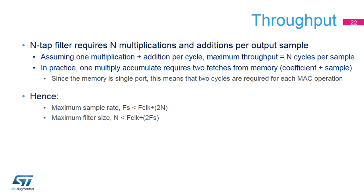The clock reference of the FMAC module is the Cortex-M4 with FPU free-running clock, F-Clock. An N-tap filter such as FIR requires N multiplications and additions per output sample, knowing that each MAC requires 2 memory reads, thus 2 clock cycles. As a consequence, the maximum sample rate is F-Clock divided by 2N, and N must be lower than F-Clock frequency divided by 2 times the maximum sample rate frequency. Assuming the F-Clock frequency of the STM32G4 is 170 MHz, the maximum filter size at sampling frequency F-S equal to 2 Msamples/s is N lower than 42 taps, and the maximum sample rate for N equal to 128 taps is F-S lower than 664 kHz.